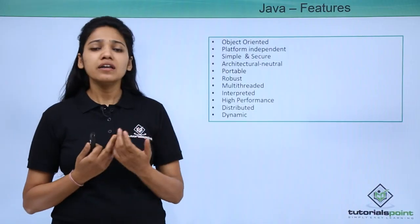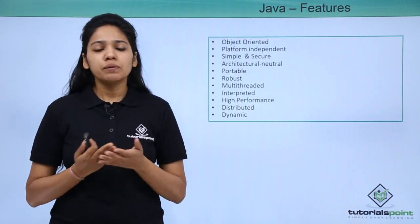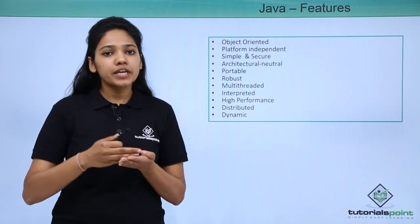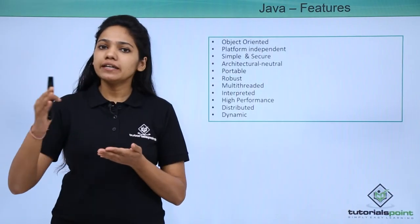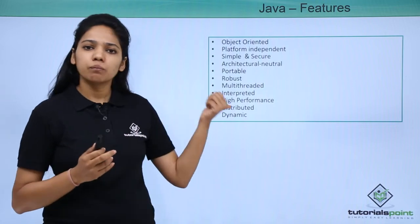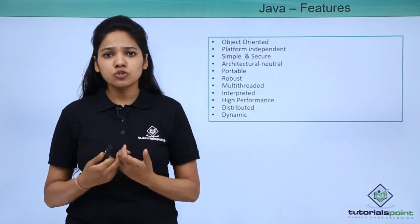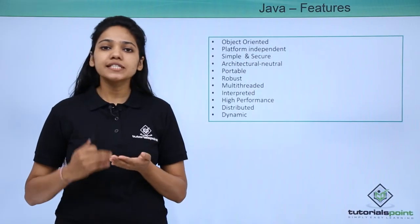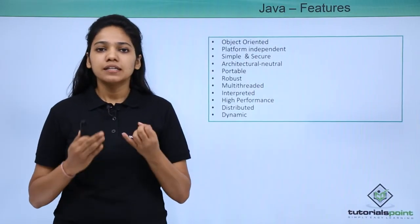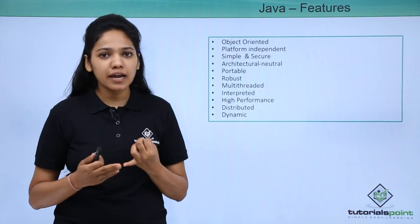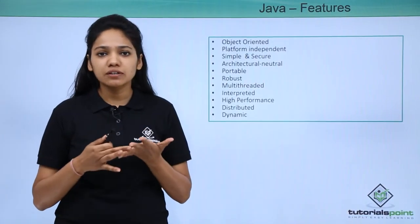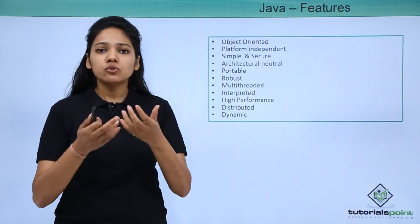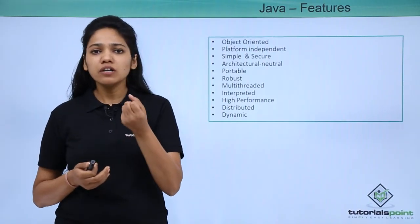Java is also portable because its bytecode can be carried to and run on any platform. Java is also robust — that is, strong. The features that make Java robust include exception handling, the garbage collector, and the removal of the difficult concept of pointers. These features together make Java strong.